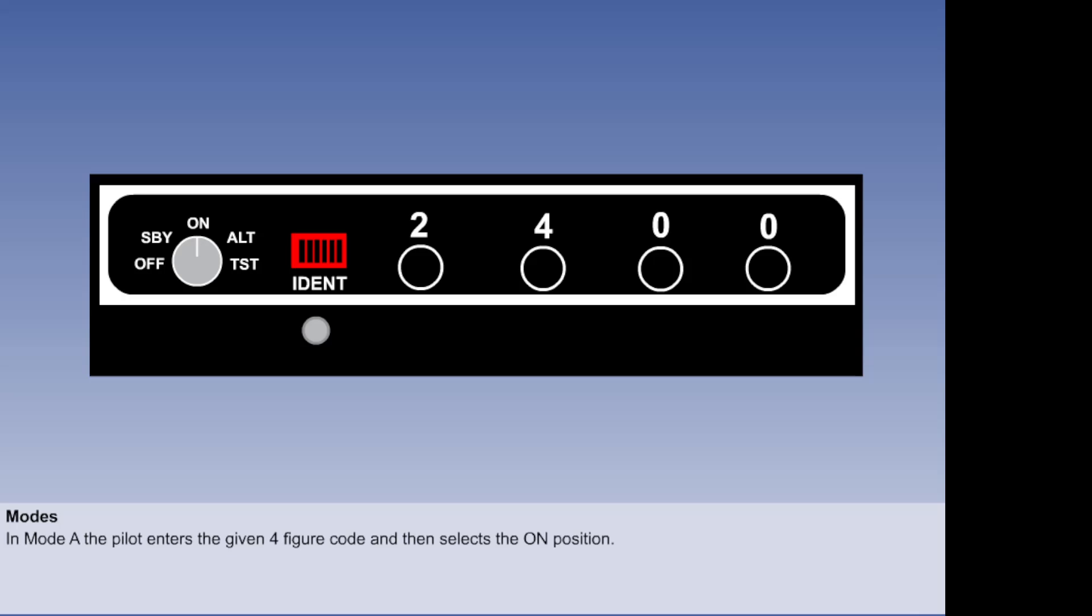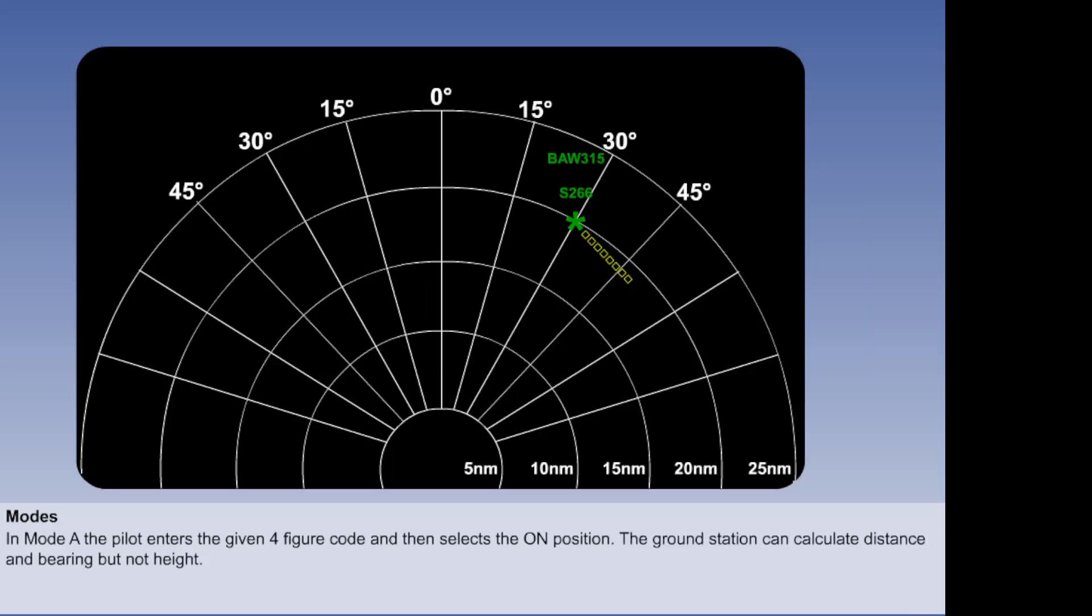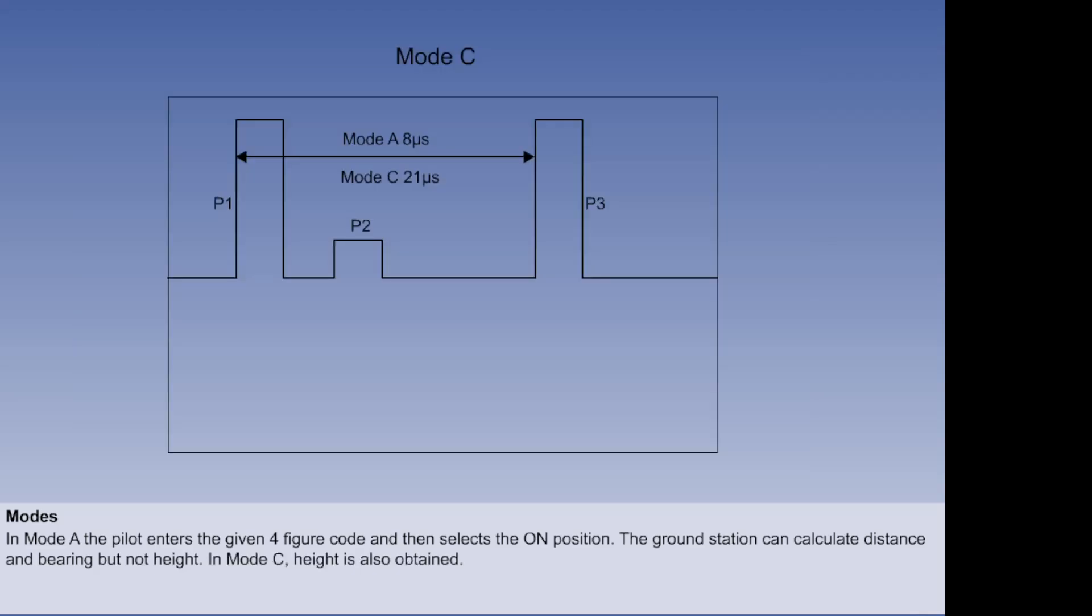The ground station interrogates simultaneously in mode alpha and mode Charlie. Given that an aircraft will be allocated an ATC squawk, the pilot will have selected those numbers in the corresponding windows on the transponder. When interrogated, the transponder produces a series of reply pulses. When the ground station receives the mode alpha code, it can calculate the aircraft's bearing from the ground station, but it does not know the height of the aircraft. To obtain the height of the aircraft, the ground station sends a mode Charlie interrogation, which we have seen means that pulses P1 and P3 are 21 microseconds apart.